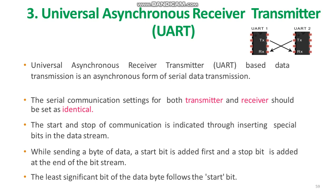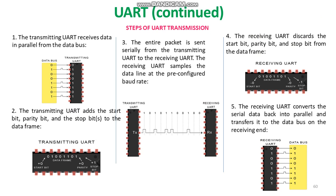Let us see how UART transmission works. First, the transmitting UART receives data in parallel from the data bus. Second, the transmitting UART adds the start bit, parity bit, and the stop bit to the data frame.